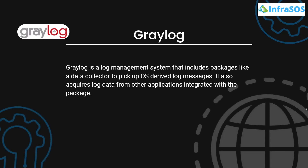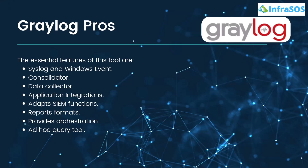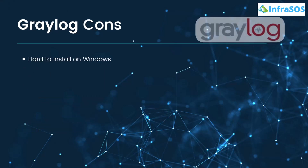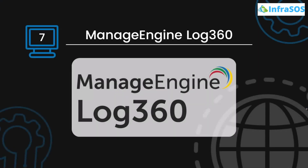Number six is Graylog. Graylog is a log management system that includes packages like a data collector to pick up OS-derived log messages and acquires log data from other integrated applications. Pros include acting as a syslog and Windows event consolidator and data collector, application integrations, SIEM function report formats, and orchestration. Its major drawback is that it is very hard to install on Windows.